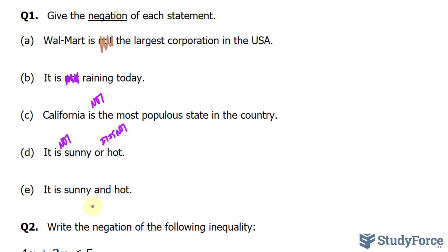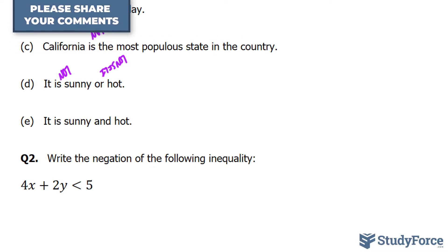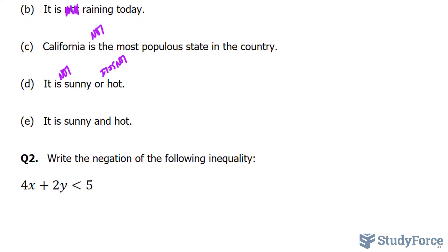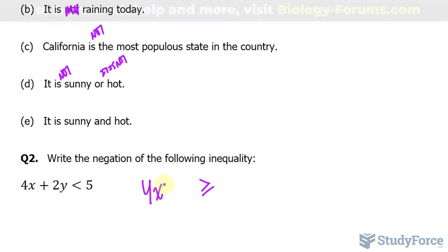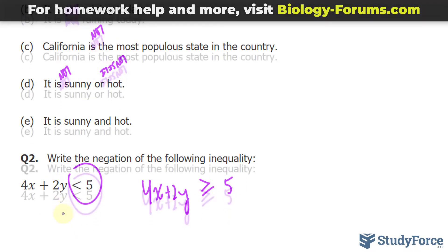In question 2, we are expected to write the negation of the following inequality: 4x + 2y is less than 5. What we can do is introduce another symbol — the one that looks like this — where 4x + 2y is greater than or equal to 5. That's completely opposite of what's stated here.